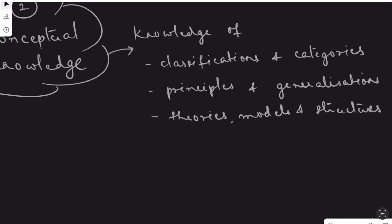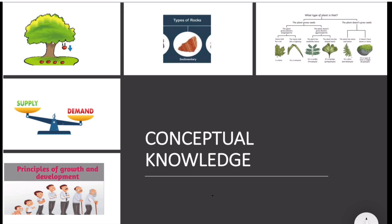Examples of knowledge of classification and categories include classification of leaves, classification of clouds, or the types of rocks. Knowledge of principles and generalizations includes principles of development and gravity. An example of knowledge of theories, models and structures is supply and demand theory - what is the concept of supply and demand in economics and what is its effect in a market. All these fall under conceptual knowledge.